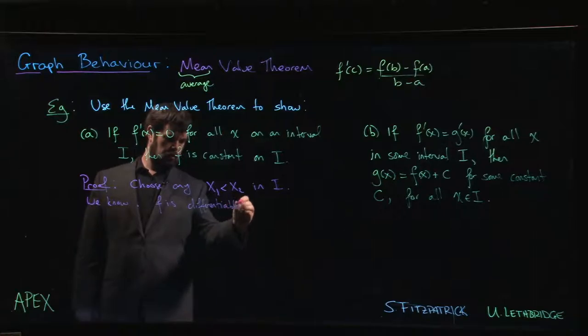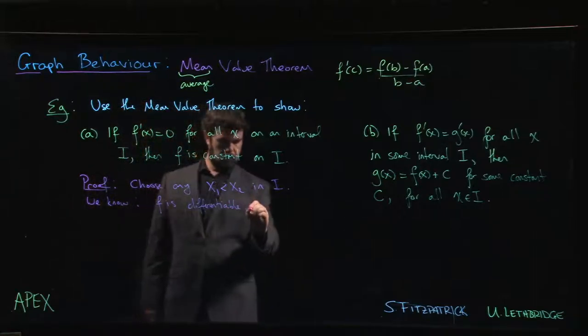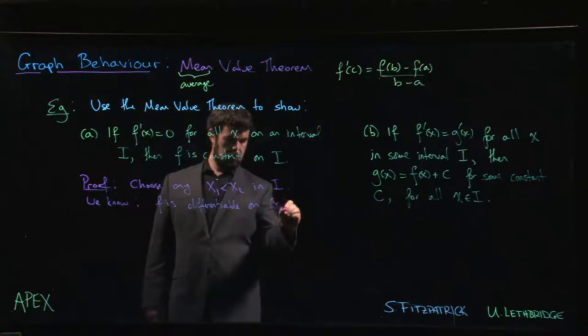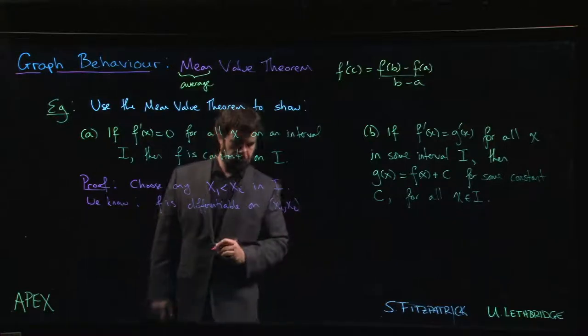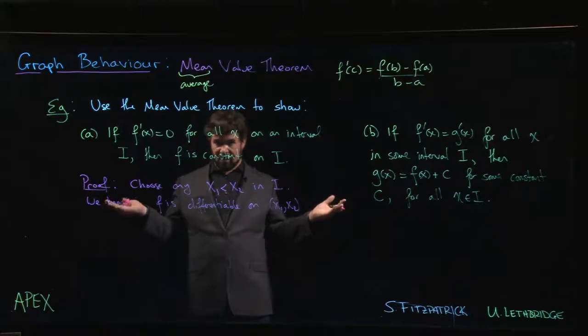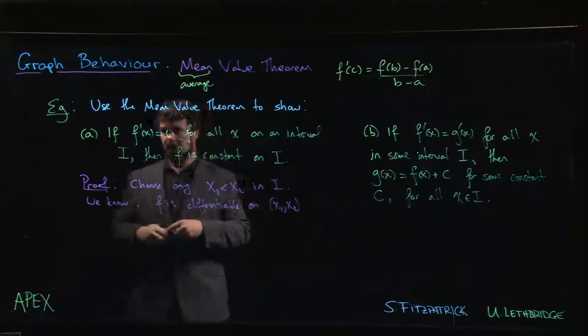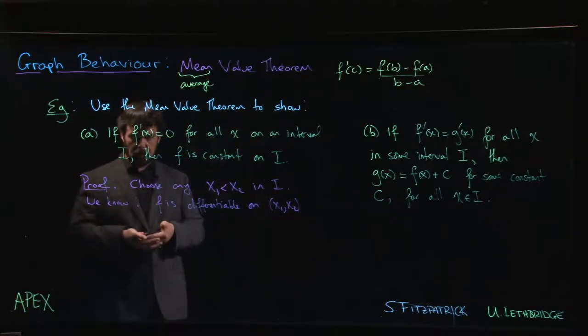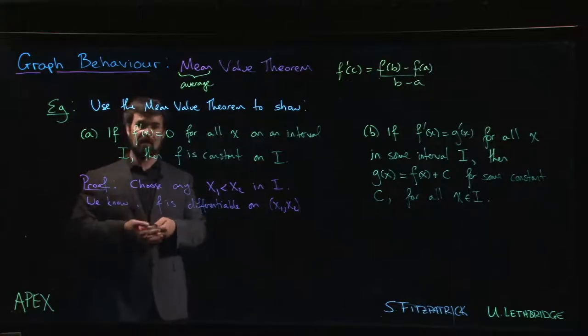Why do we know that? We know the derivative is zero. So if we're telling you that the derivative is zero, then implicitly we're telling you that that derivative must exist. It has to exist before it can equal zero.